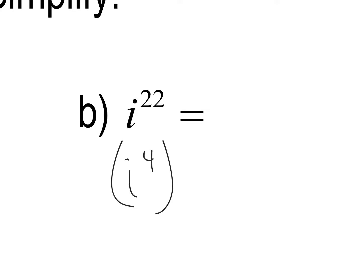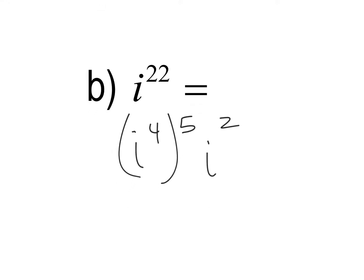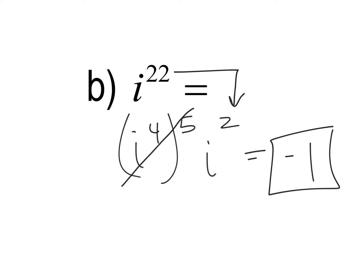For i to the 22nd, rewrite it as i to the fourth to the fifth — that gives 20 — then two more left over, so that's i squared. I to the fourth to the fifth is just 1 raised to the fifth, which is still 1, so this simplifies to i squared, which is negative 1. You're looking for the largest multiple of 4 that doesn't exceed your exponent.